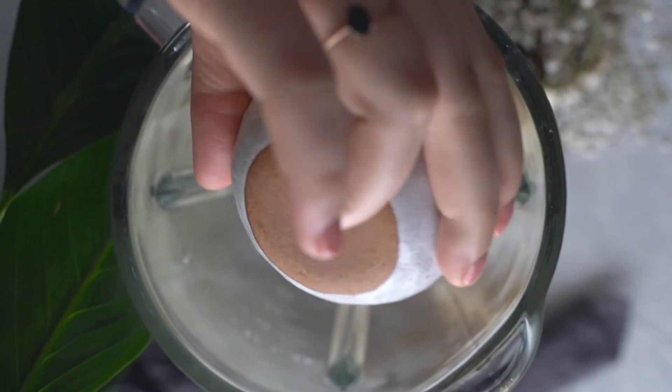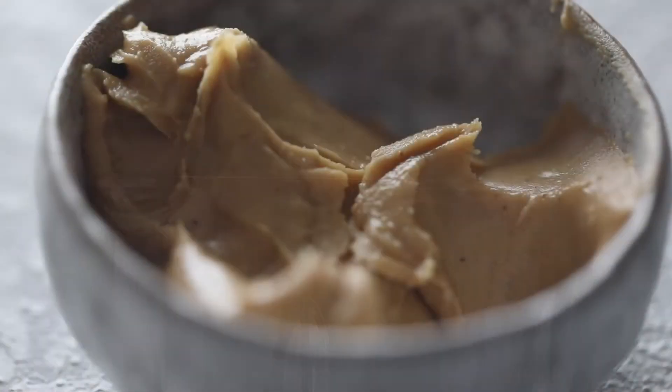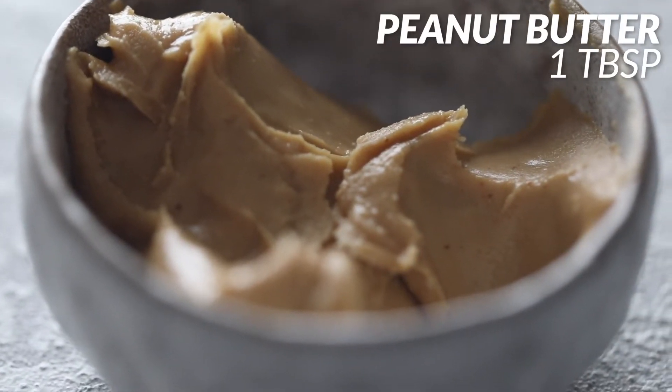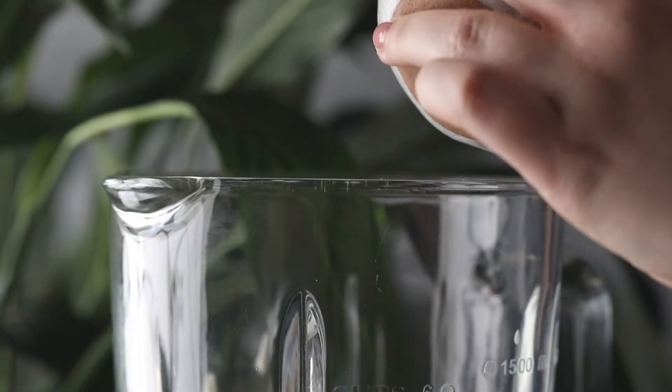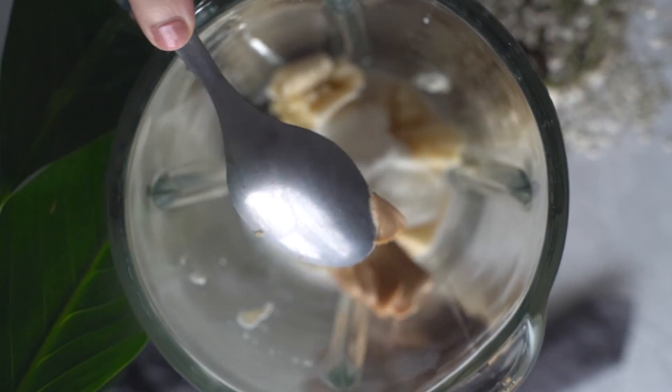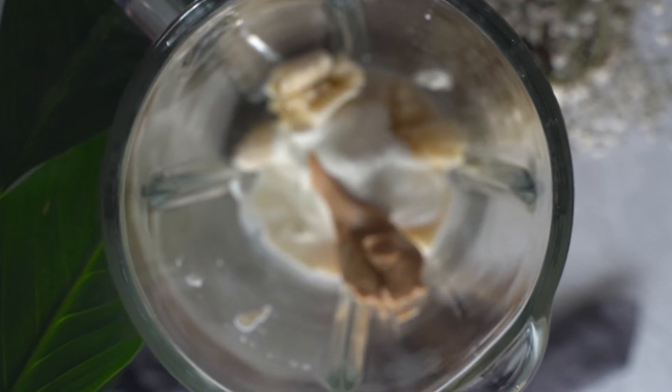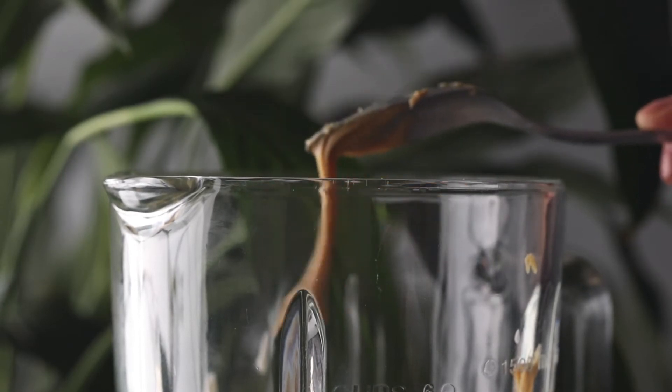Add one tablespoon of peanut butter. Peanut butter is a lovely source of healthy fats, fiber, protein, and magnesium, so it's a great addition to any smoothie if you want to boost those nutrients up.